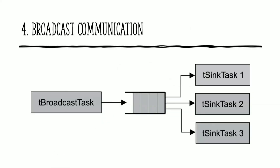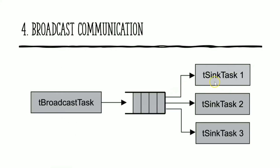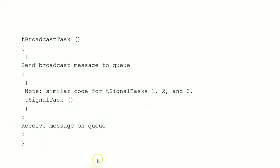Broadcast communication: here only one message queue is present but more than one task receives the same message. A broadcast task sends a message to the message queue, and the message queue broadcasts that same message to all sink tasks. Pseudo code: broadcast task — send broadcast message to queue; signal tasks one, two, and three — all receive the same message on the queue. Since it is a broadcast, all signal tasks receive the same message.